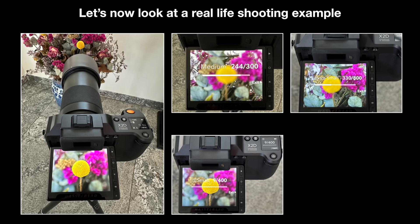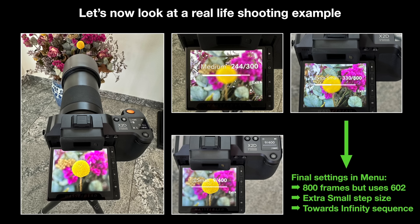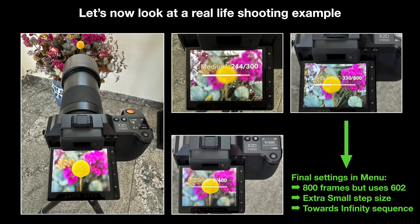For the real-life shooting, I first tried medium step size with 300 frames, then small step size with 400 frames. What finally worked was 800 frames at extra small step size, of which I used 602 and discarded the rest. The final settings: 800 frames shot, 602 used, extra small step size, sequence towards infinity. The lesson: always shoot more frames than you think you need.